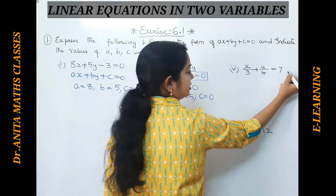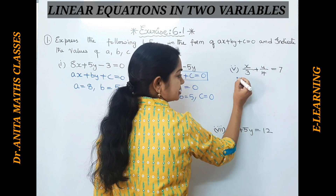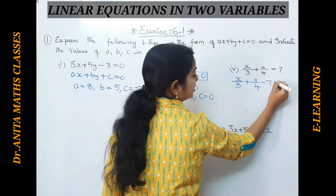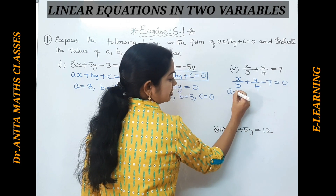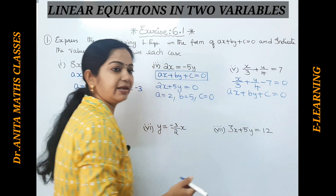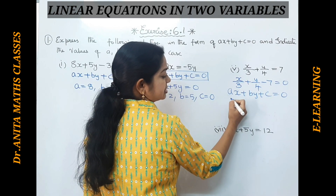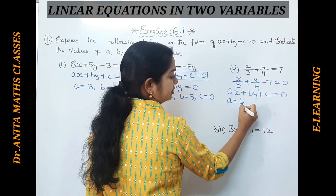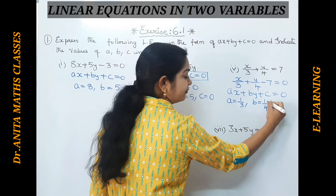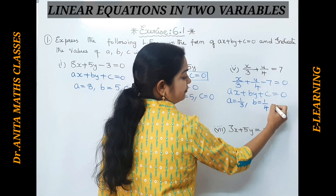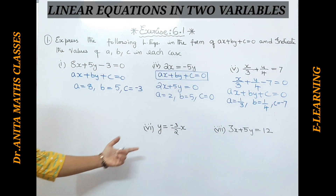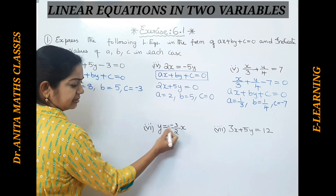Moving to the next problem, the equation is already in the general form but the constant is outside. Bringing it inside: x/3 + y/4 − 7 = 0. This is in the form ax + by + c = 0. Comparing, a = 1/3, because (1/3)·x = x/3. Then b = 1/4, because (1/4)·y = y/4. The value of c = −7.